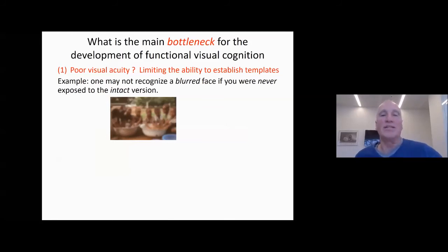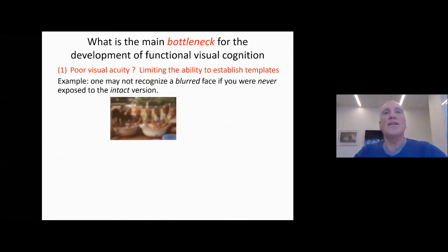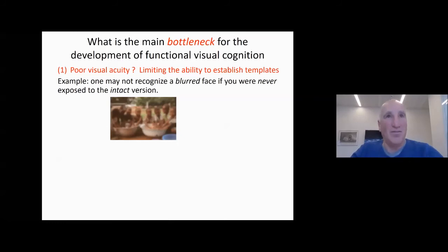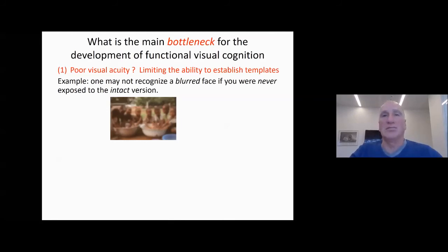What may be the main bottleneck for development of functional visual cognition? One has to remember they still have poor visual acuity, limiting the ability to establish templates. For example, you may not recognize a blurred face if you were never exposed to the intact version. If you've been exposed to image categories at fine resolution throughout a lifetime, you can extract information even from heavily blurred images. But if you've never been exposed to this, maybe this is a major limitation.